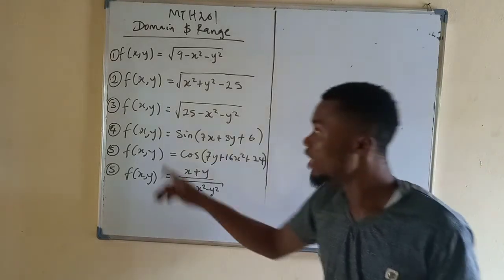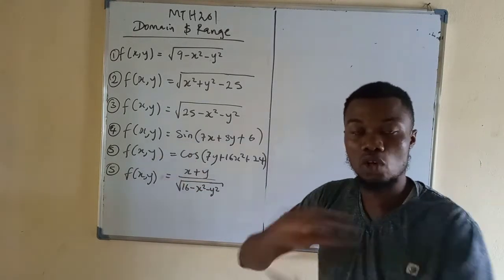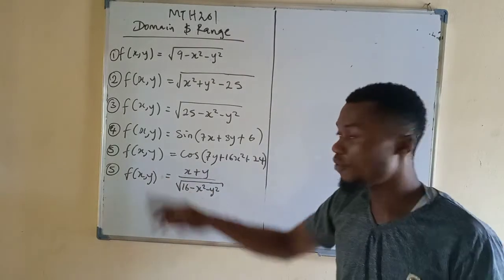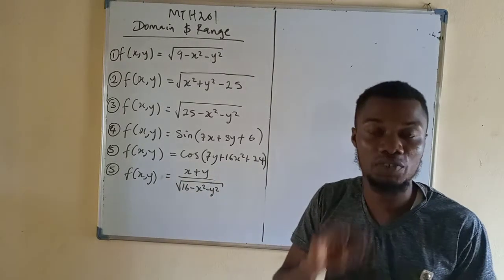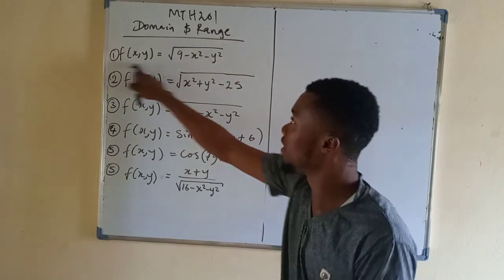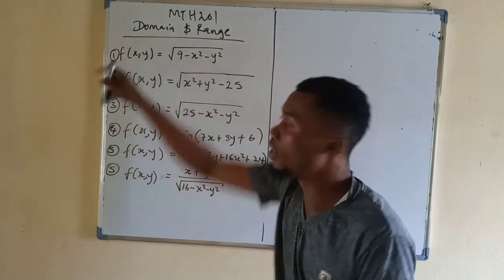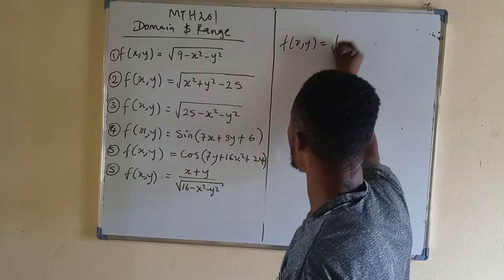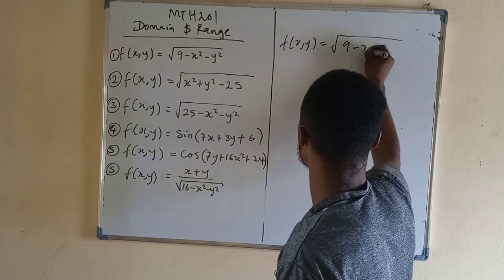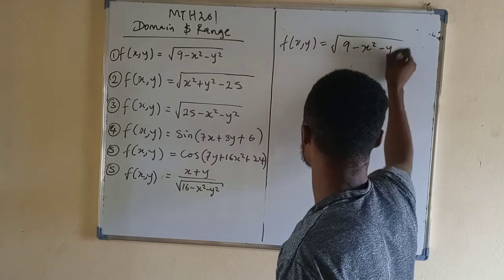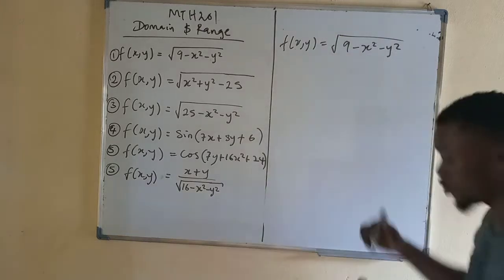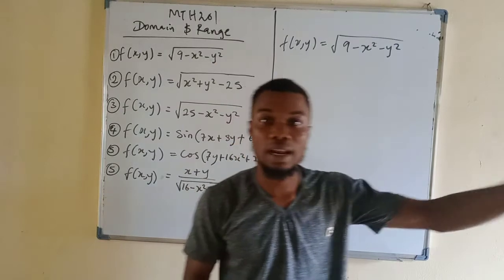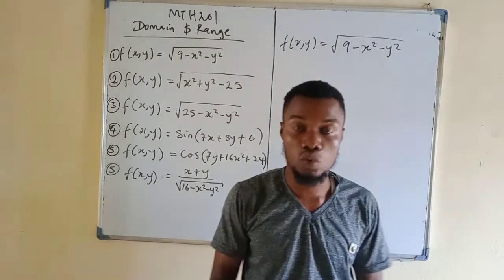Don't forget: the domain of every sin function is all real numbers, range from minus 1 to 1. The domain of every cos function is all real numbers, range from minus 1 to 1. So how do we find the domain of f(x,y) equal to square root of 9 minus x squared minus y squared? The domain simply means the points where the function is defined.